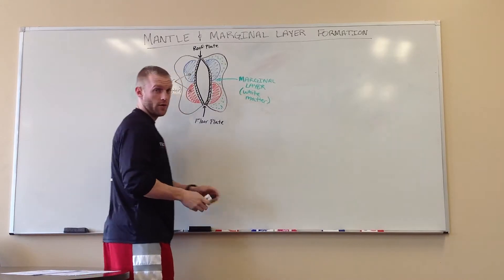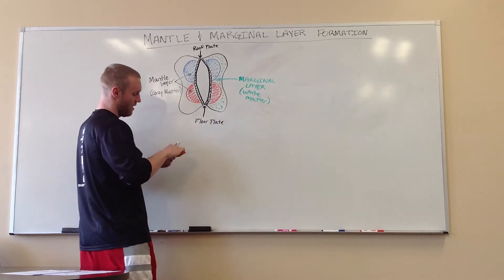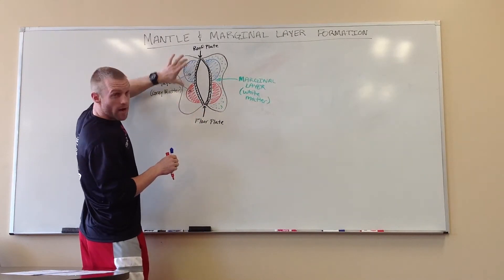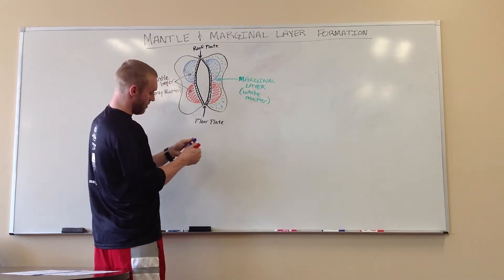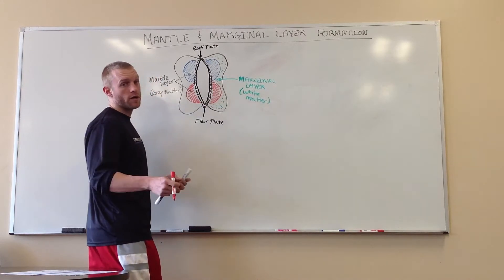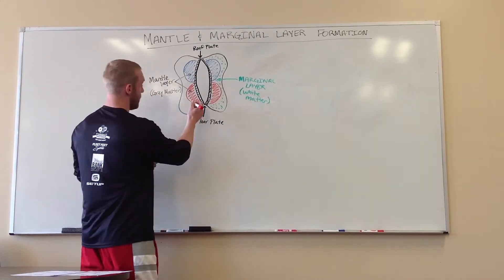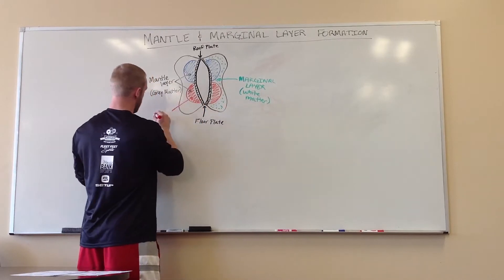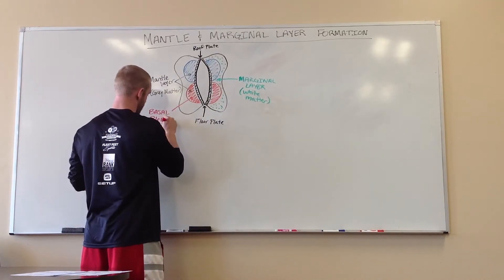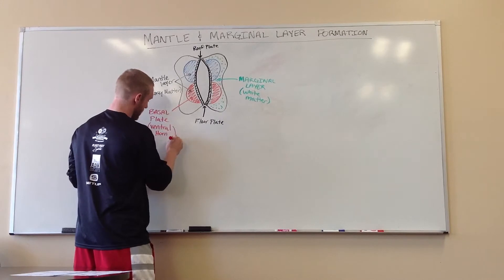There's one more tidbit I'd like to cover to bring it all together. You have your two mantle layers, and this is going to transform into your basal and alar plates. The basal plate — labeled here in red — is going to turn into our ventral horn.